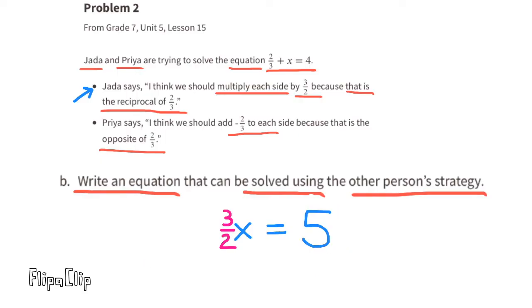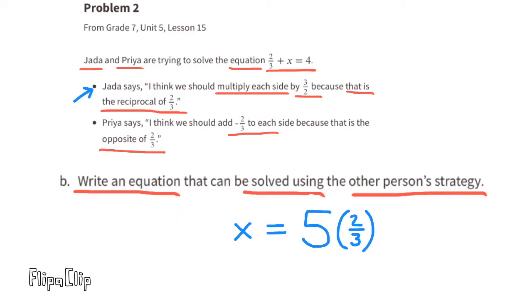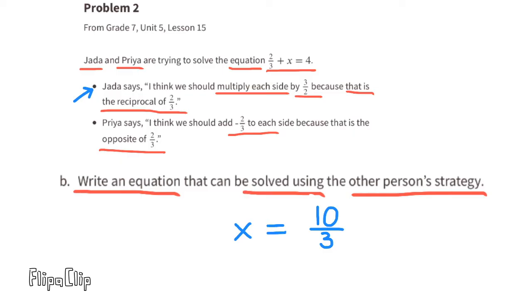Three halves x is the same as one and a half x. To find the value of x, multiply both sides by the reciprocal of three halves, which is two-thirds. Two-thirds times three halves x equals x. So x equals five times two-thirds, or five over one times two-thirds. Five times two is ten, one times three is three, so x equals ten-thirds. Ten divided by three is three with one-third left over, so x equals three and one-third.